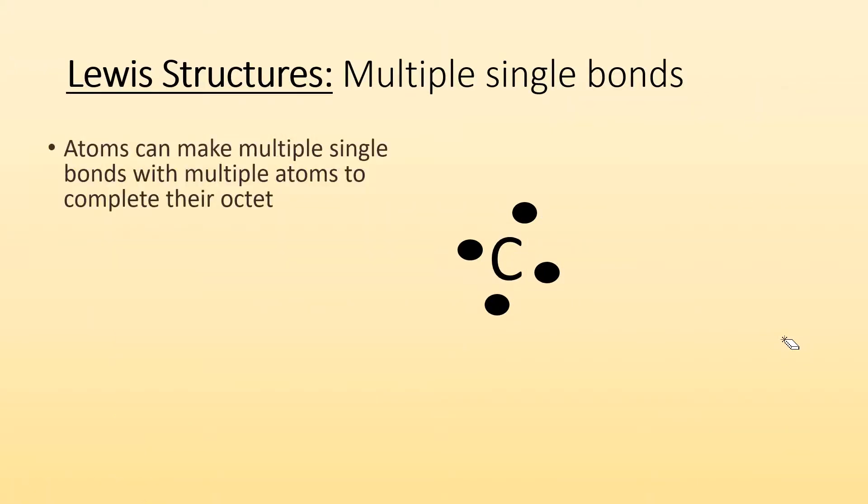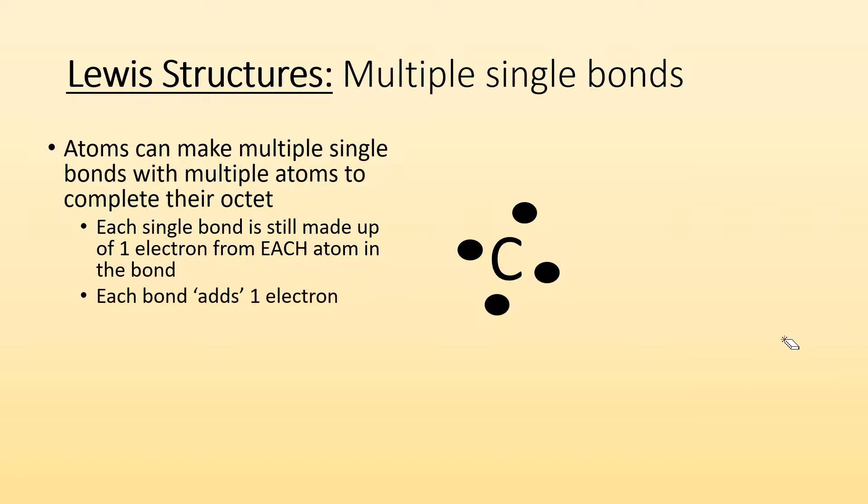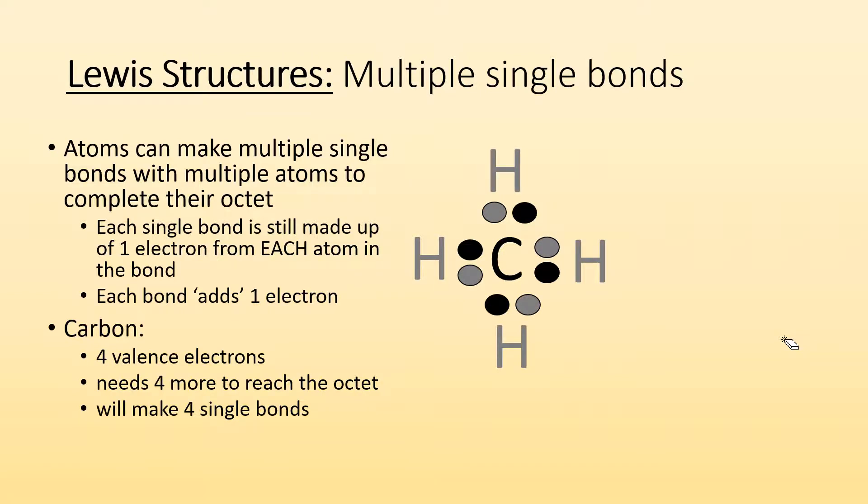So multiple single bonds. Turns out some atoms need to make more than one bond and they can make multiple single bonds with multiple other atoms in order to complete their octet. So each single bond is made up of one electron from each atom in the bond. So it's kind of like each atom gets one more electron for every time it makes a bond. So for carbon, well, it has four valence electrons to get to the octet. It needs to get four more. So it's going to want to make four bonds, four single bonds. So if I had four hydrogens that each want to make one bond, I get methane. So another way to draw this instead of drawing the dots is to replace the shared electrons with lines. So you would get a Lewis structure that looks like this.